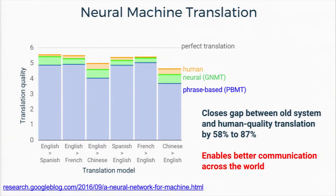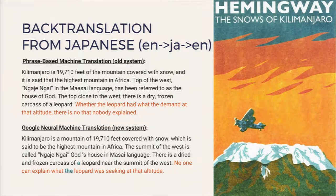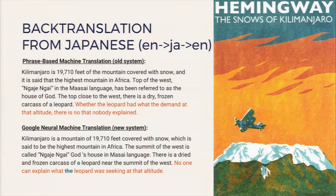In some cases like French to English, this is actually closing the gap quite substantially towards human-level translation. The previous phrase-based output gave garbled results like 'whether the leopard had what the demand at that altitude, there is no that nobody explained.' The new neural machine translation renders that as 'No one can explain what leopard was seeking at that altitude' — a huge qualitative increase in translation accuracy.